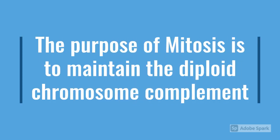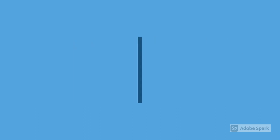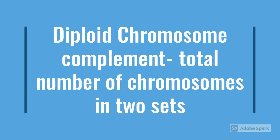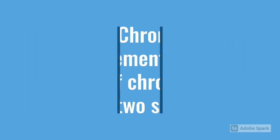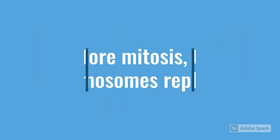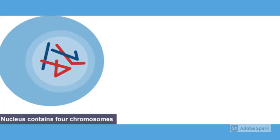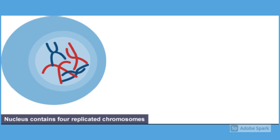The point of mitosis is to maintain the diploid chromosome complement. Before mitosis happens, the chromosomes need to replicate. So if the cell originally had four chromosomes, when it replicates, it will have eight chromosomes.